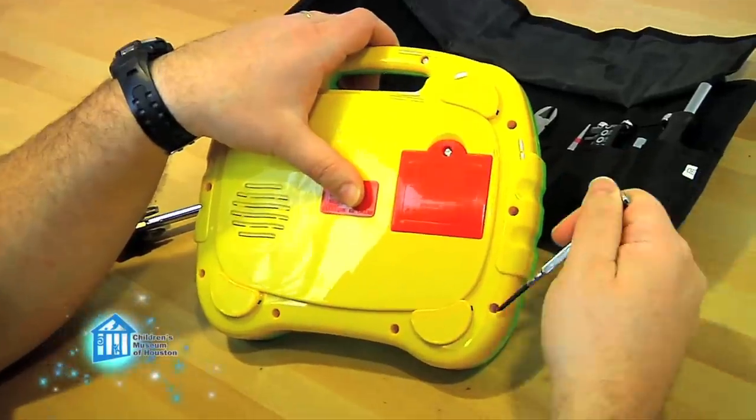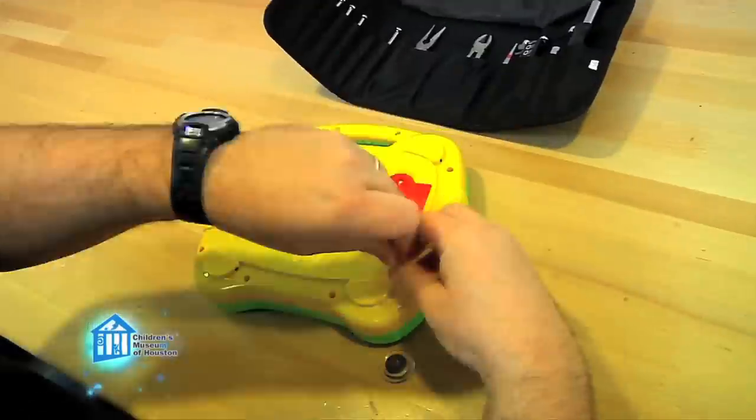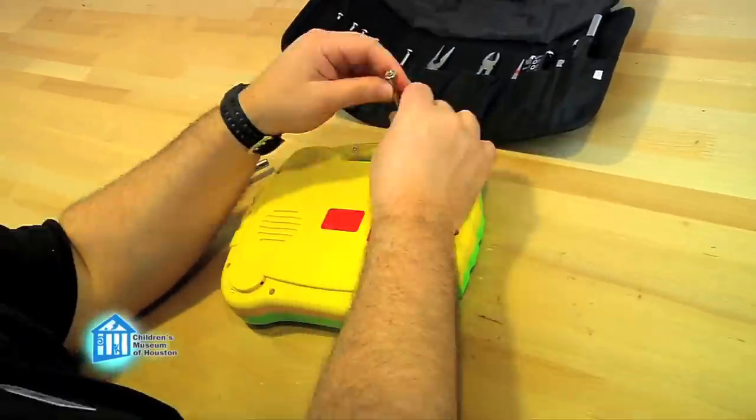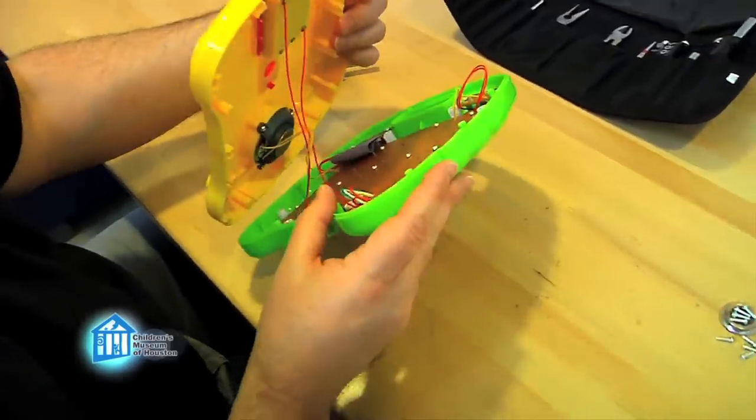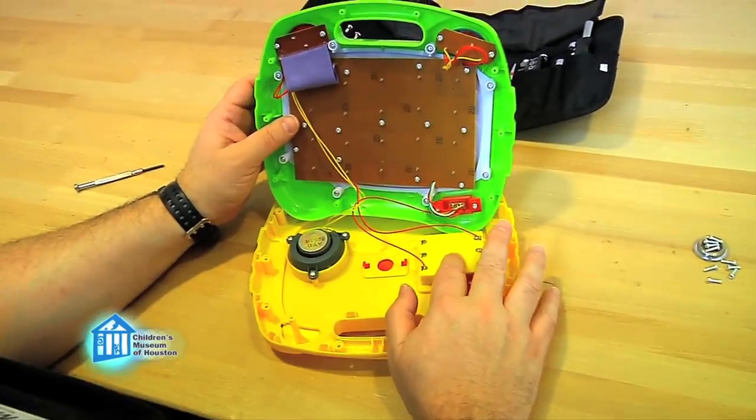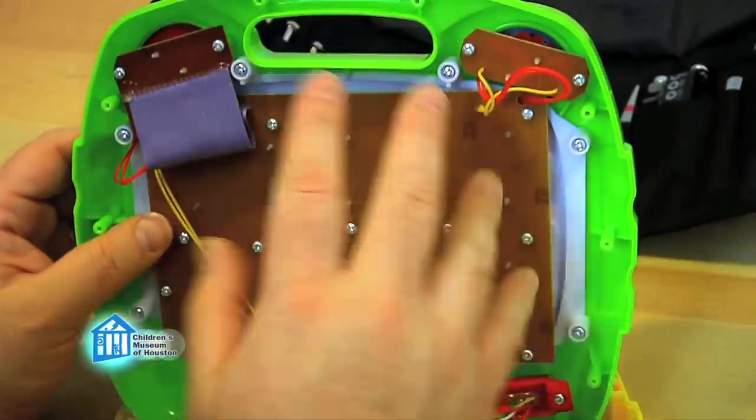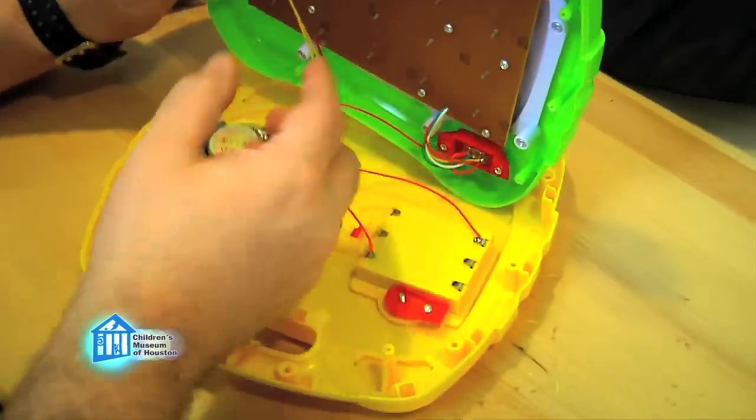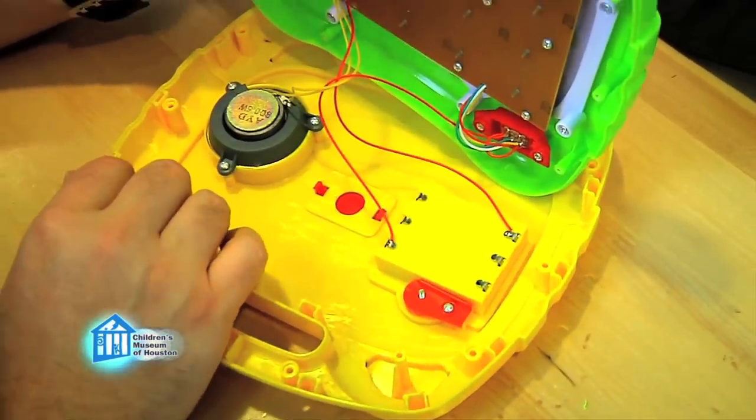Looks like we've got a whole bunch of screws back here, so we're going to undo all of them in order to see what's inside. So as we can see in here, this is the battery pack, this is our speaker, and this is the rest of it. We're going to take out the battery pack and the speaker first, so that way we can better access everything else in here.